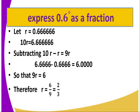We are required to express 0.6 recurring — there is a dot above the 6 — as a fraction. That means the number is 0.6666. Let R be the recurring number, so R = 0.6666. Then 10R = 6.666. You subtract R from 10R and 0.666 from 6.666, giving 9R = 6. Dividing both sides by 9 gives R = 6 over 9. Dividing further by 3 gives 2 over 3. So 0.6 recurring as a fraction is 2 over 3.